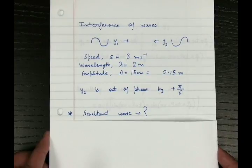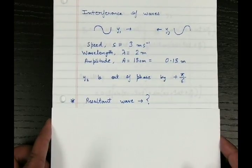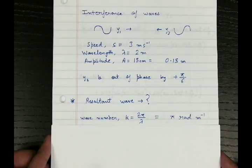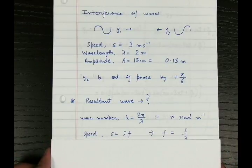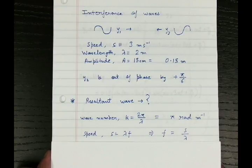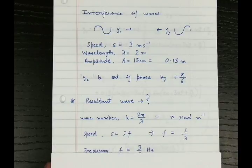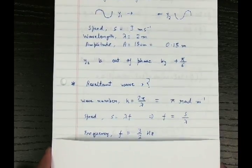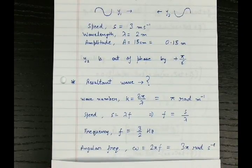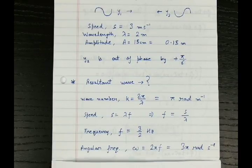First, let's gather more information about the two given waves. The wave number k equals 2 pi by lambda. Since lambda is 2 meters, k equals pi radians per meter. The frequency equals speed divided by wavelength, giving 3 by 2 hertz. Using the frequency, the angular frequency omega equals 2 pi times f, which gives 3 pi radians per second.